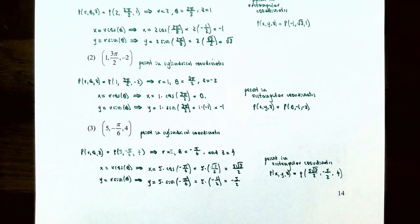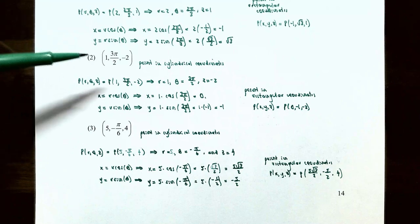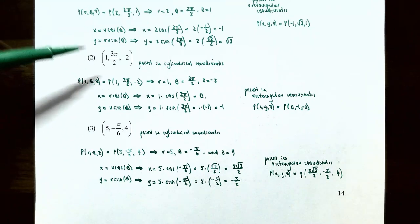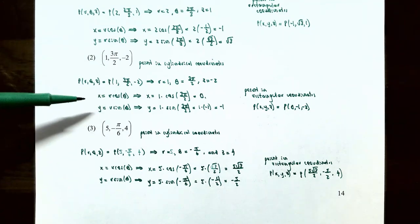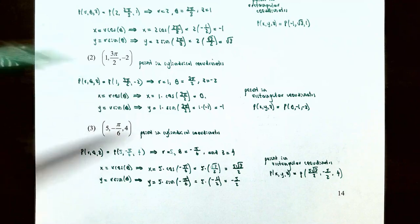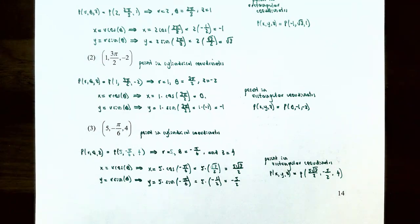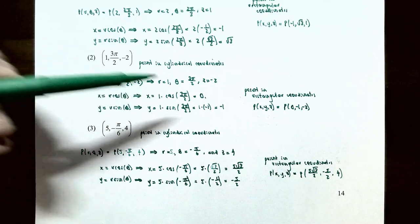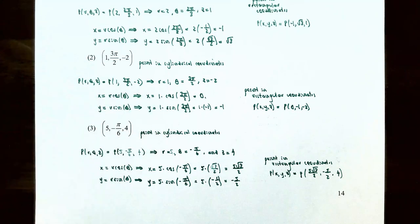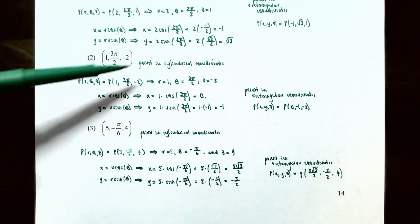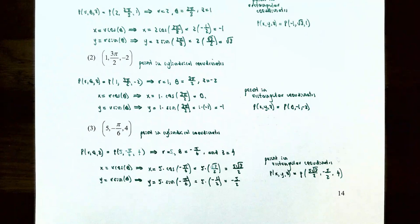Number two: the point (1, 3π/2, −2) in cylindrical coordinates. Here r equals 1, theta equals 3π/2, and z equals negative 2. For x equals r cosine theta: x equals 1 times cosine(3π/2) equals 1 times 0 equals 0. For y equals r sine theta: y equals 1 times sine(3π/2) equals 1 times negative 1 equals negative 1. And z stays as negative 2. So the point (1, 3π/2, −2) in cylindrical coordinates is the point (0, −1, −2) in rectangular coordinates.